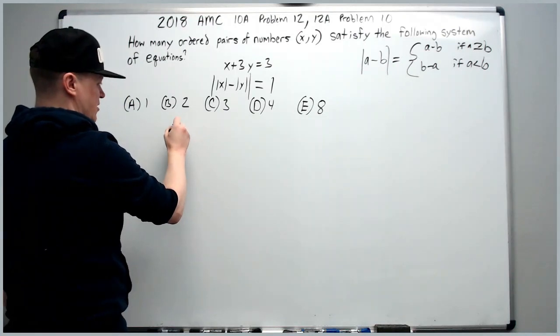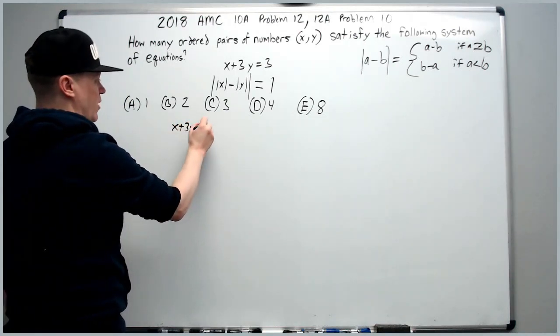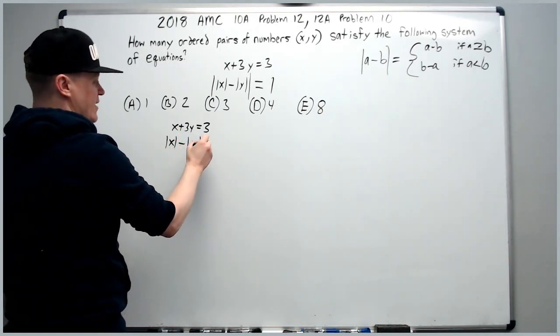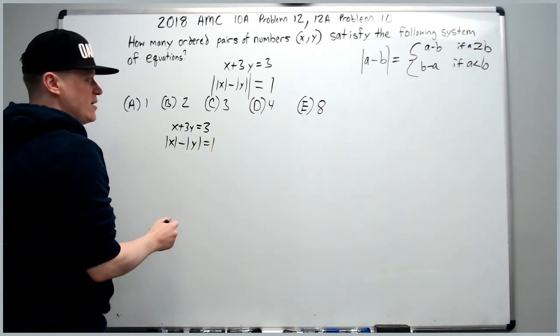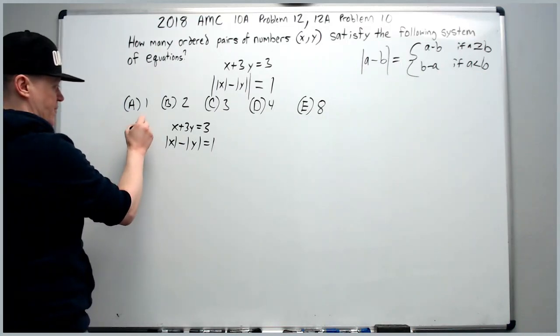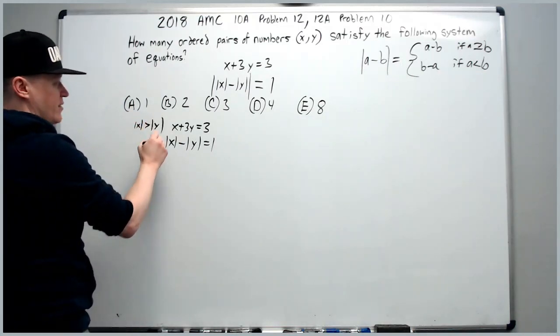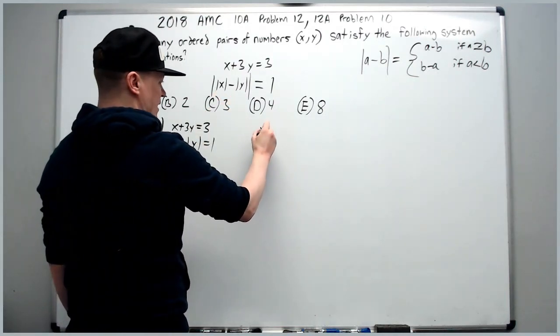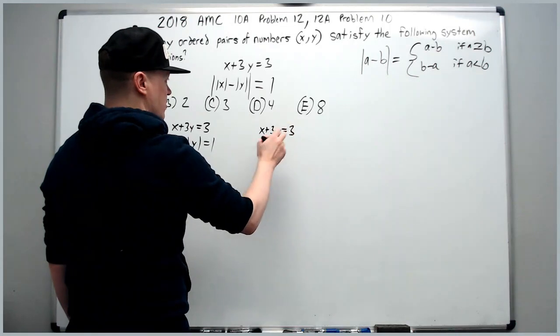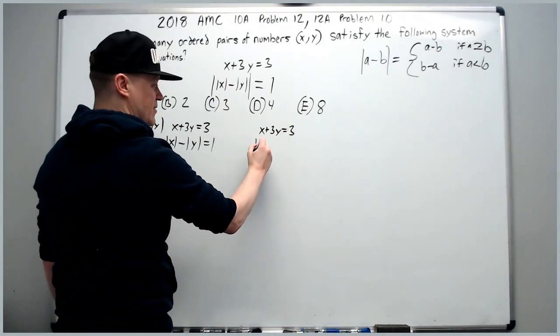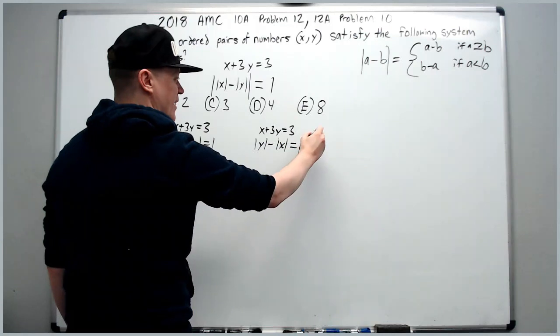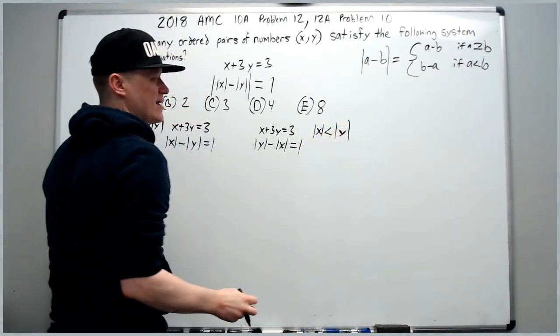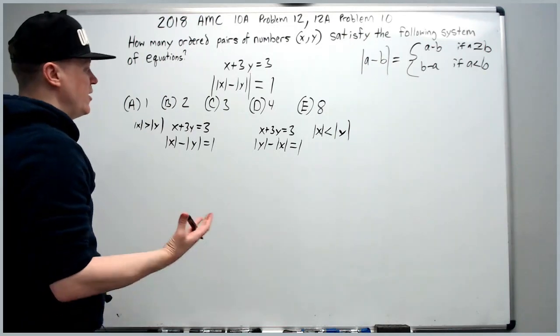You're going to get system 1 will be x plus 3y equals 3 combined with the absolute value of x minus the absolute value of y equals 1. This would be if the absolute value of x is greater than the absolute value of y. The second one will be x plus 3y equals 3, and you just flip it. Absolute value of y minus absolute value of x equals 1 for when the absolute value of x is less than the absolute value of y. We proceed to graph.